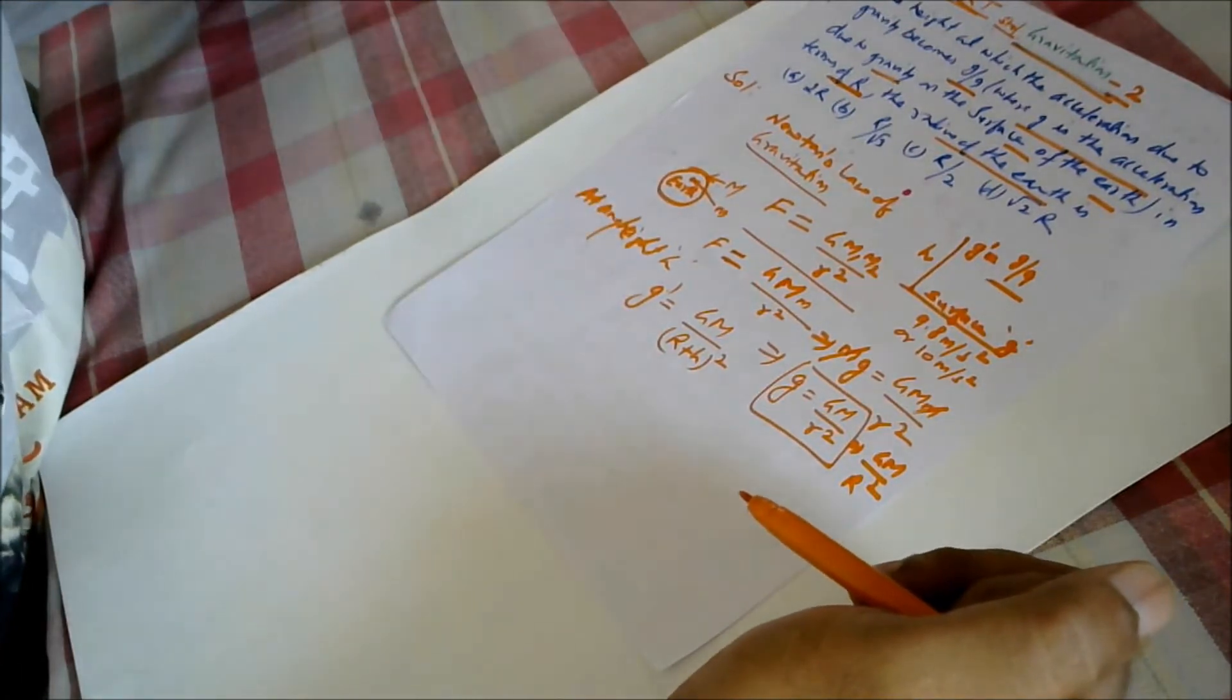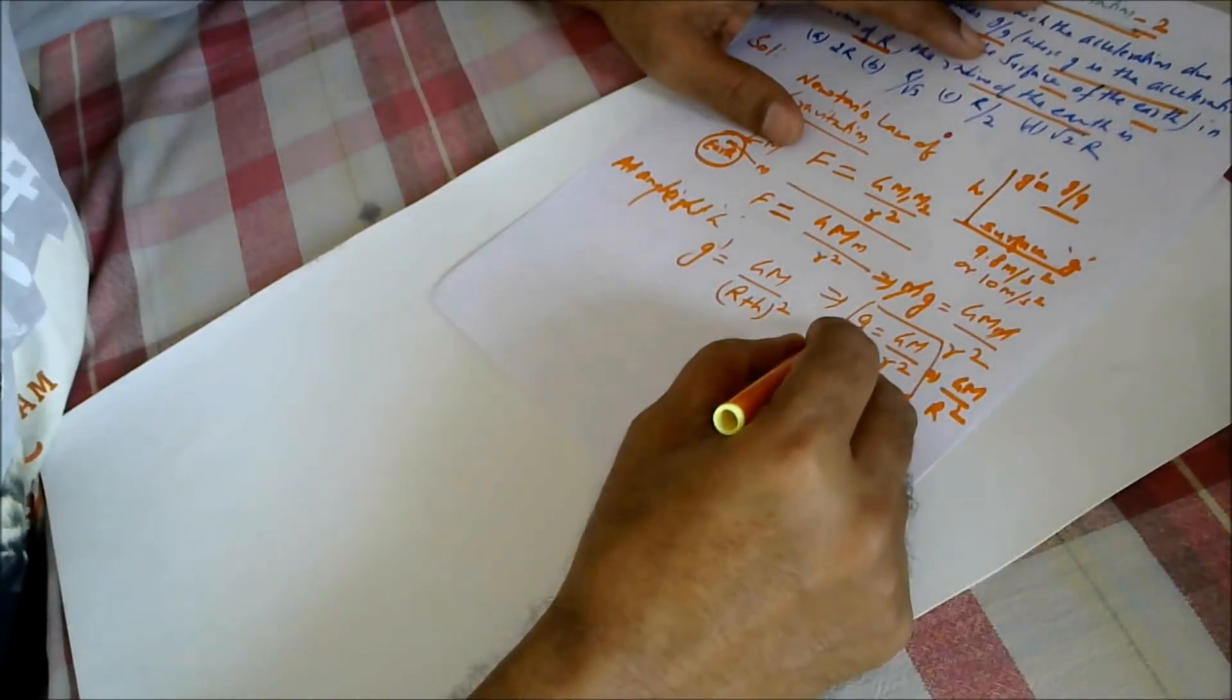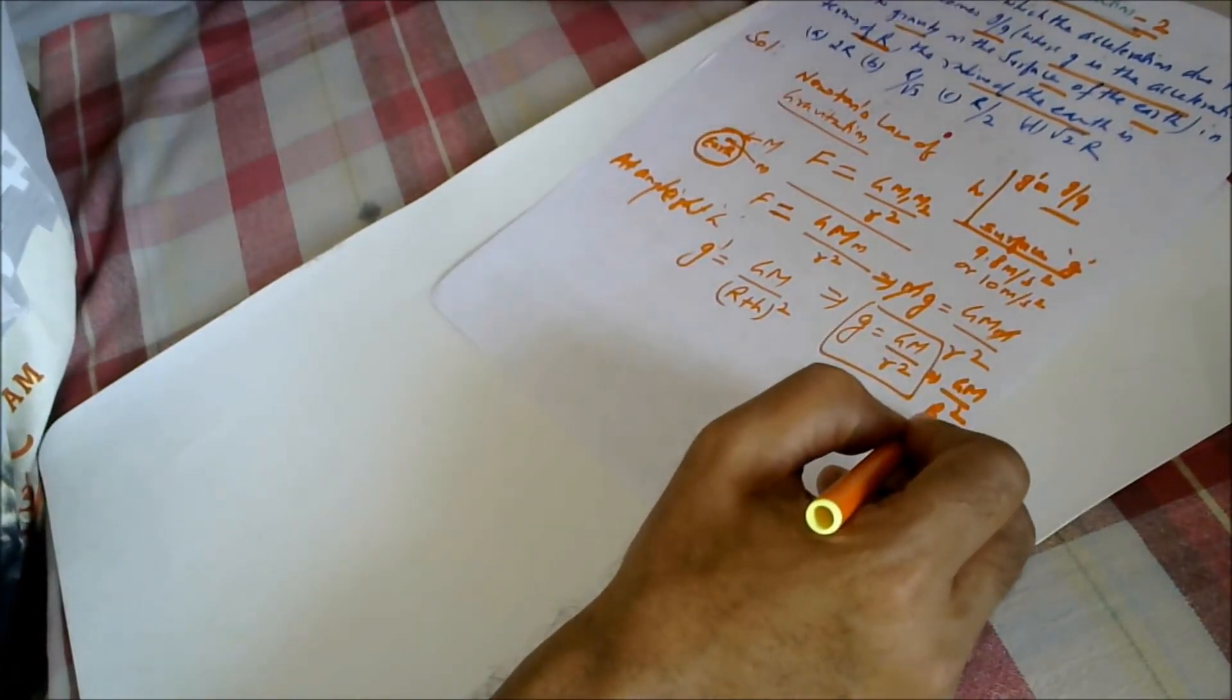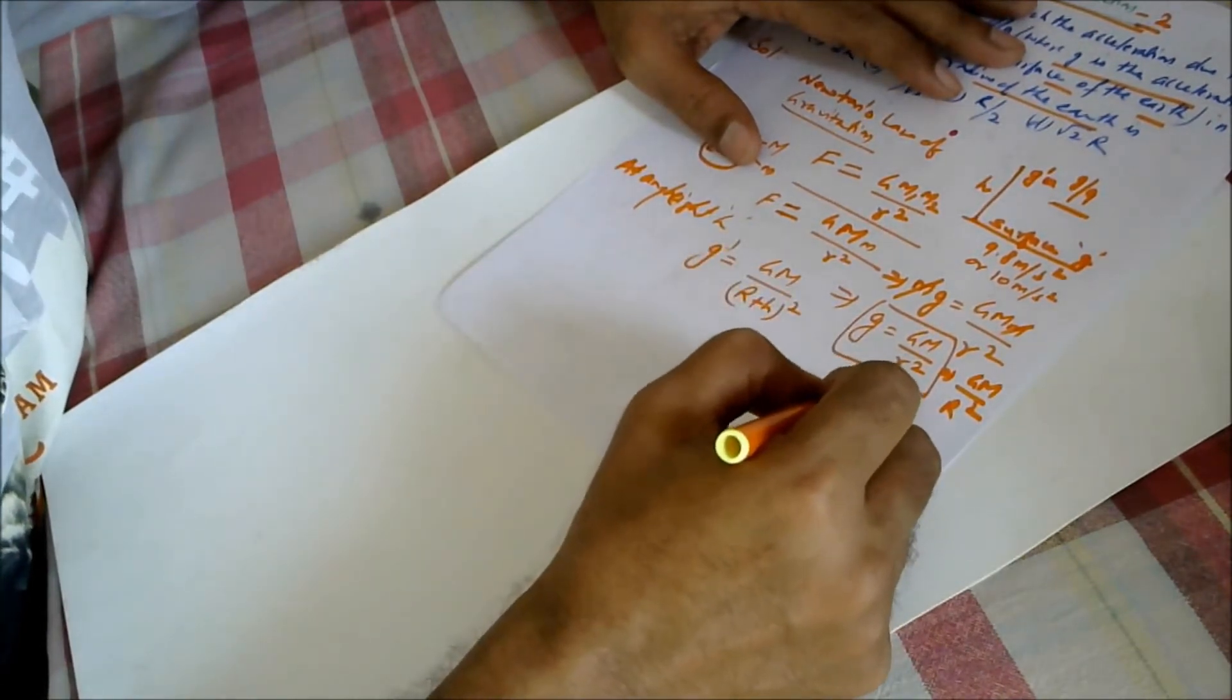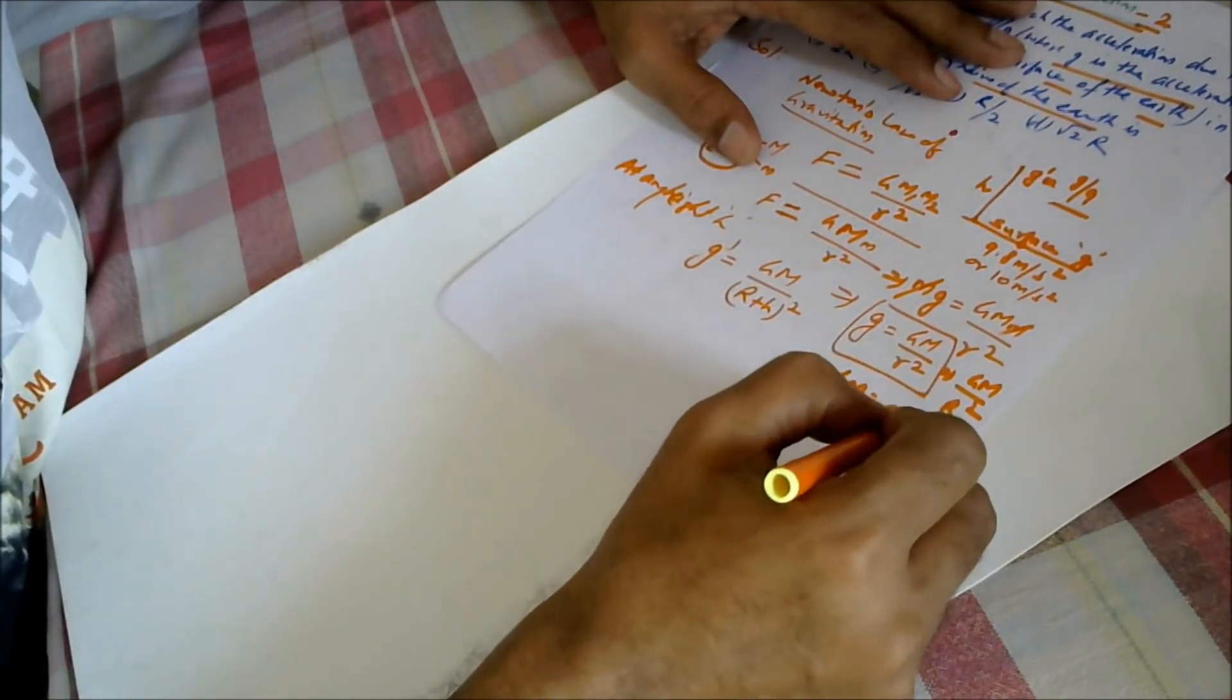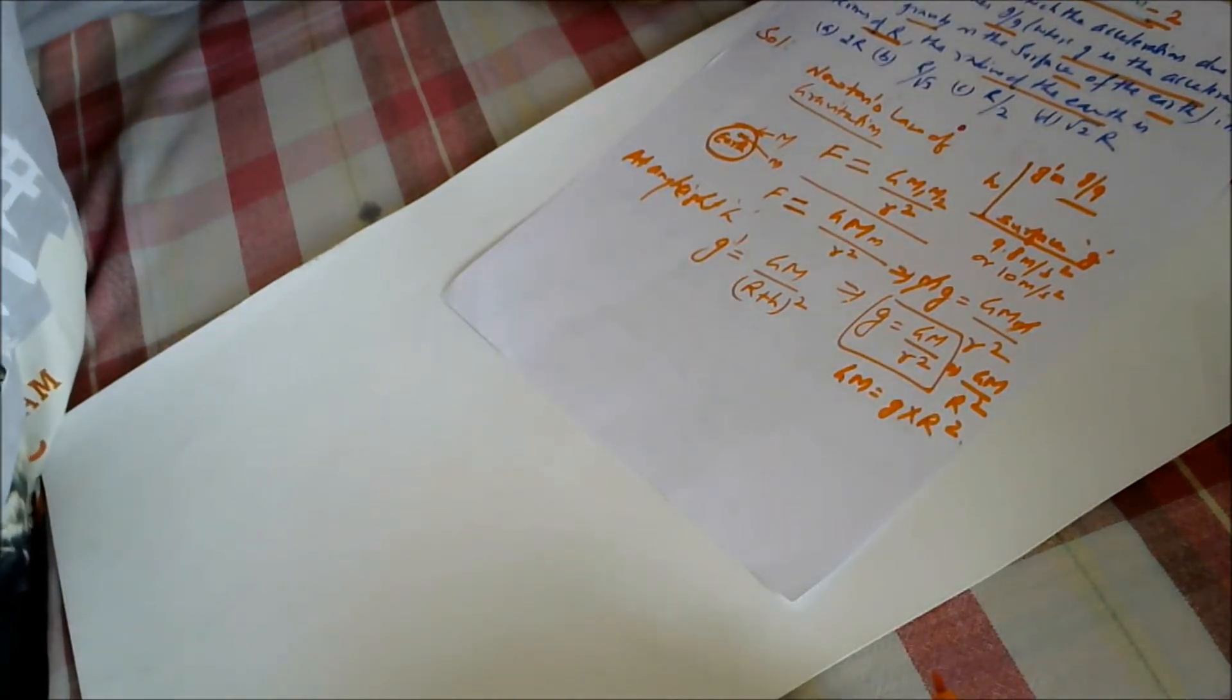Let us find out. From here, if g equals GM by r square, so GM will be equal to g into r square.